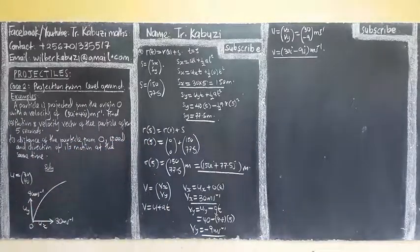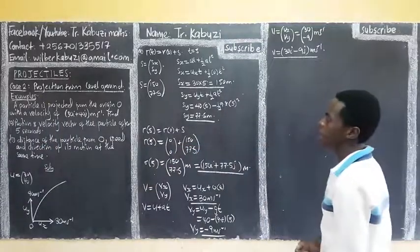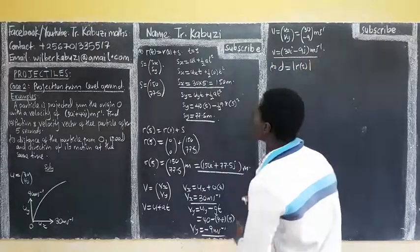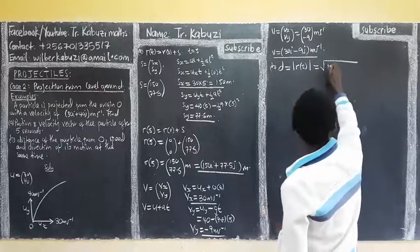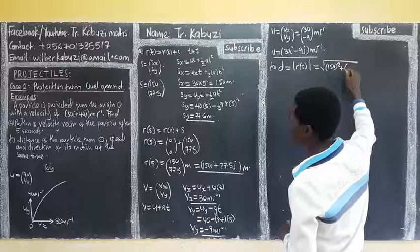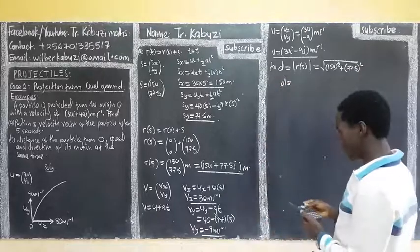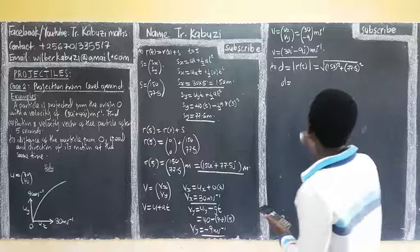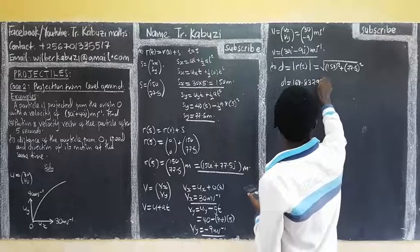The distance of the particle from O, speed and direction of its motion at the same time — the same time after 5 seconds. Now, if you have this displacement, then distance will be given by the modulus of that. So our distance is going to be the modulus of r(5), which will be the square root of 150 squared plus 77.5 squared. So our distance here is going to be 168.84 meters.